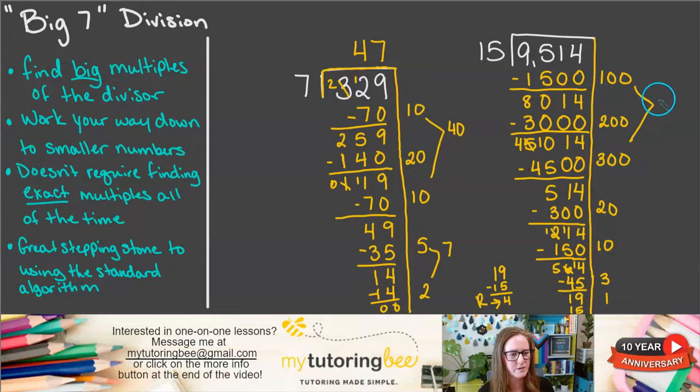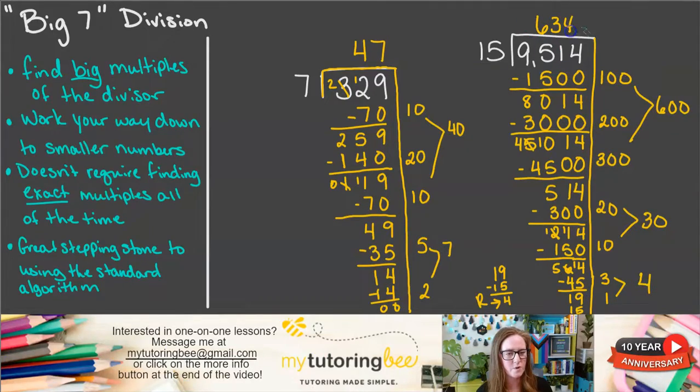So let's go ahead and add up all of our 100s. 100, 200, and 300. That gives us 600. Let's add up our 10s. That gives us 30. And then our 1s gives us 4. So we wind up with 634 and a remainder of 4.